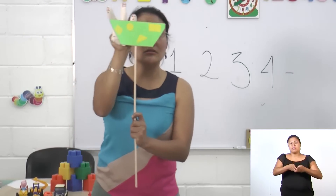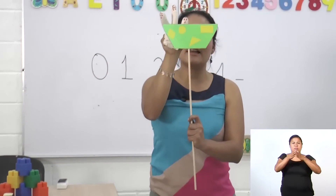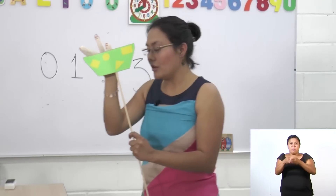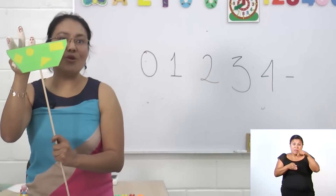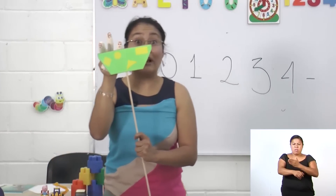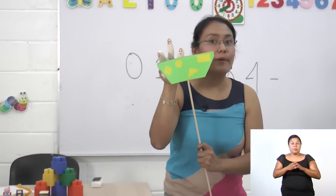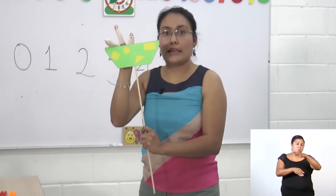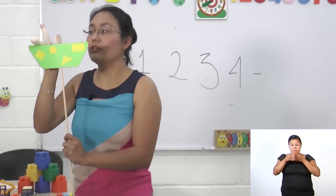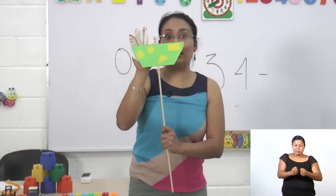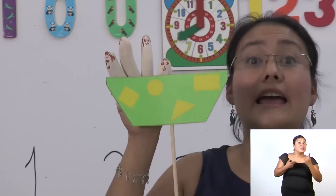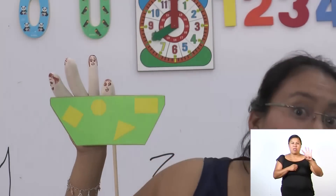El marinero dijo: ¿solo uno? Solo seríamos una colección de dos personas. Necesito más valientes. Alzó otro su mano tímidamente y entonces zarparon en el barco. Iban viajando cuando una gran tormenta apareció. El barco se movía mucho. Pero como era muy resistente, a ellos no les pasó nada. En algunos otros barcos, a través de la tormenta, se habían caído algunos al mar. Así que los marineros rescataron a uno. Y los tripulantes del barco ya no eran tres. Ahora tenemos una colección de cuatro.